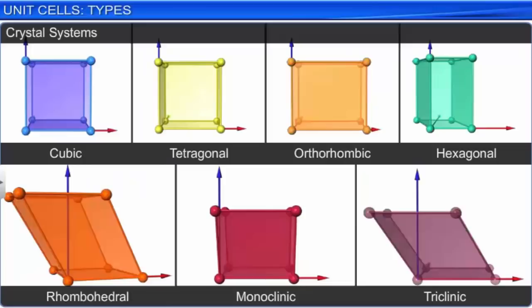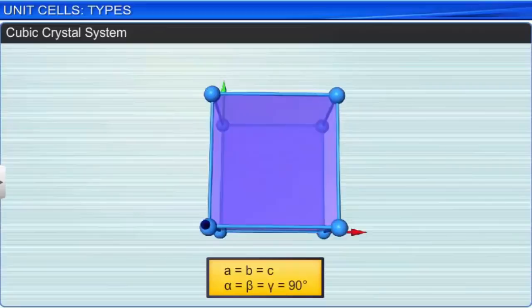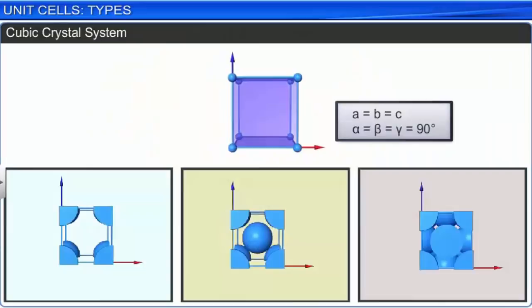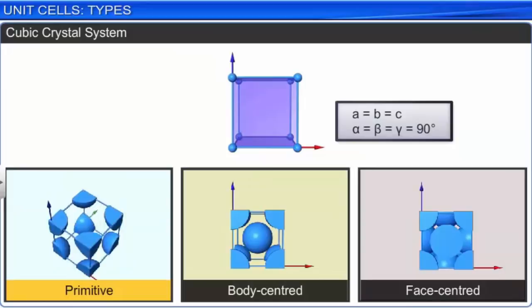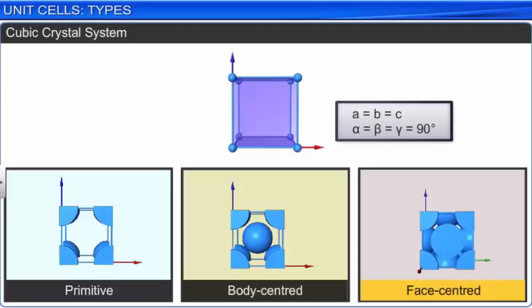In a cubic crystal system, all three axes are of equal length and are at right angles to each other. The possible lattices are primitive, body-centered, and face-centered. Sodium chloride, zinc blende, and copper are well-known examples.